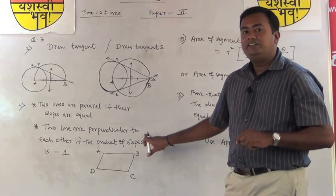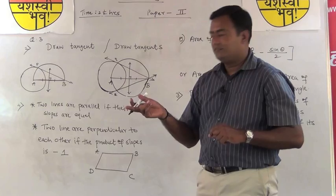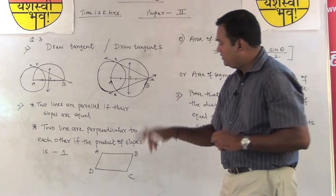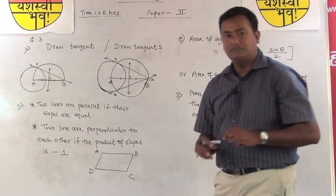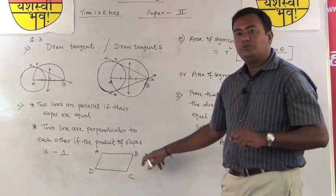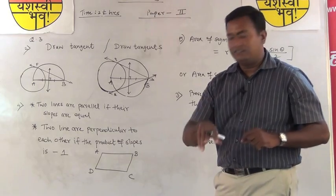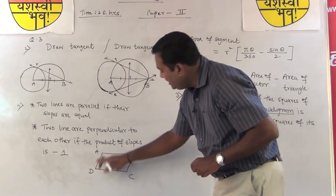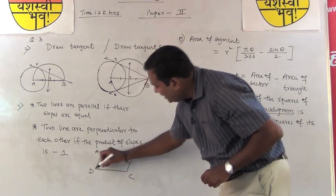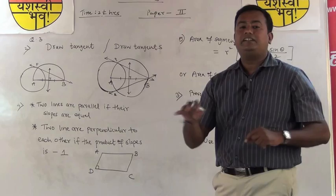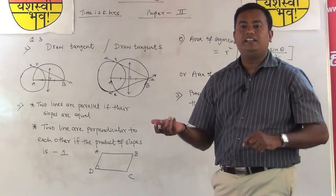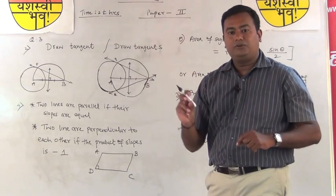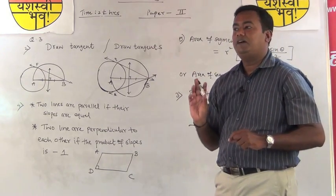Another property given in the textbook is that if the product of the slopes of two lines is minus one, the lines are perpendicular. This can be used to prove the parallelogram is a rectangle. If the slope of line AD multiplied by the slope of line DC equals minus one, then AD is perpendicular to DC, and the parallelogram becomes a rectangle since it has a 90-degree angle. Using slope concepts is very important here.